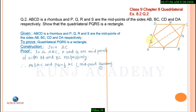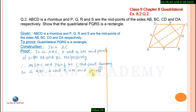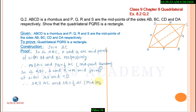Similarly, in triangle ADC, S is the midpoint of side AD and R is the midpoint of side CD. Therefore, SR is parallel to AC and SR equals half of AC.